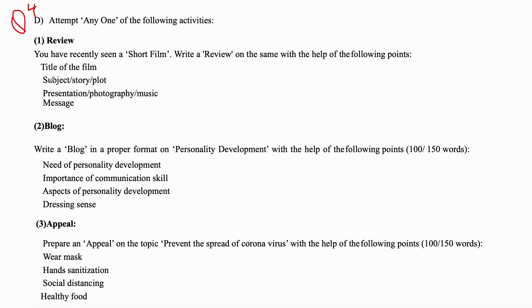The three activities are: number one is a review, then a blog, then an appeal. We will solve all three one by one. Let's start with the first one — review.